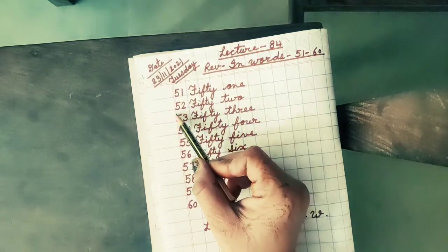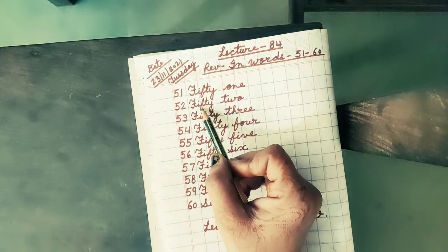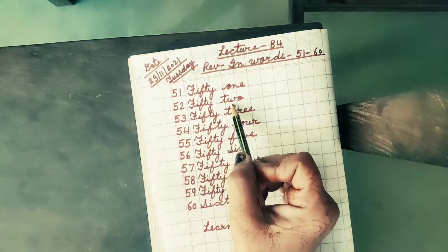Next number is 52. The spelling of 52 is F, I, F, T, Y, 50, T, W, O, 2.